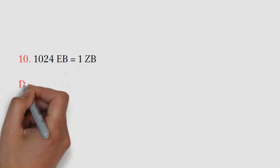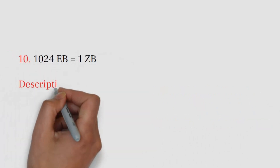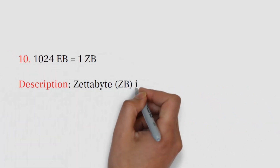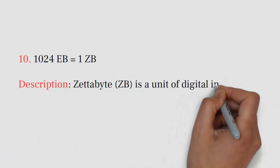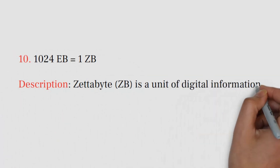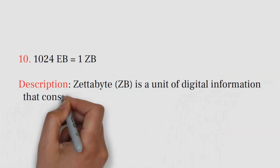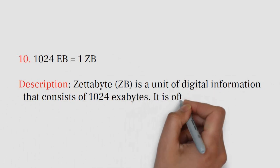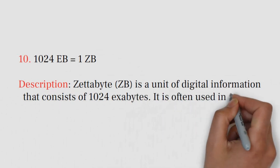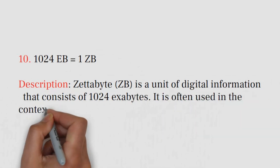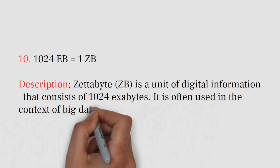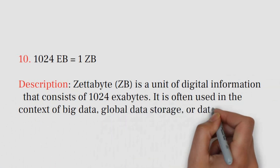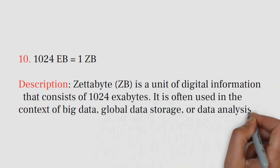Number 10: 1024 EBs equals 1 ZB. Zetabyte (ZB) is a unit of digital information that consists of 1024 exabytes. It is often used in the context of big data, global data storage, or data analysis.